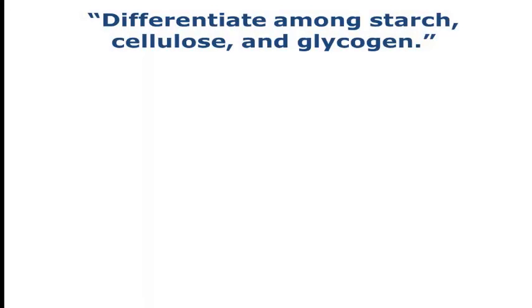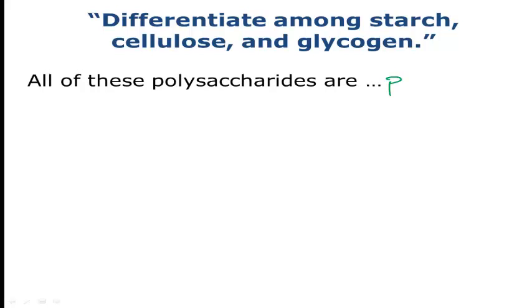Moving on to the next objective, which actually sounds very similar to the last one, differentiate among starch, cellulose, and glycogen. So these of course are three polysaccharides. You do need to be able to recognize the difference between those three. All of these polysaccharides essentially are polymers of glucose monomers. So that's not a bad thing to write down here. Polymers of glucose.